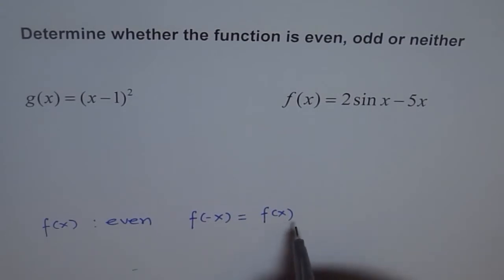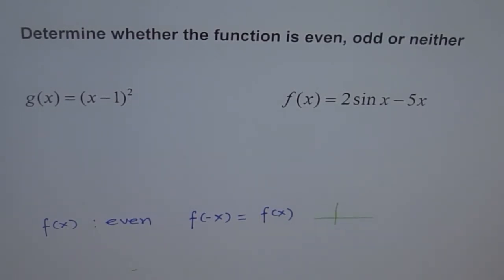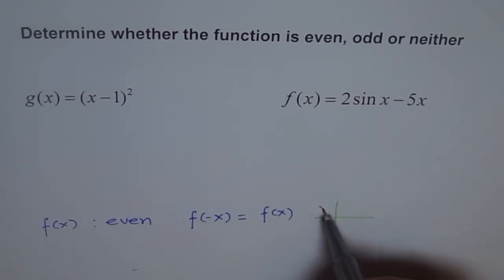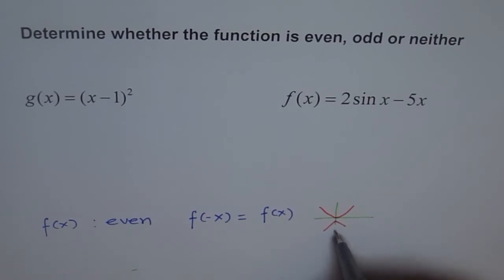An even function is symmetric about the y-axis. For example, if I have something like a parabola, it is symmetric about the y-axis. So when you see graphically, a function like this will be even because it is symmetric about the y-axis.